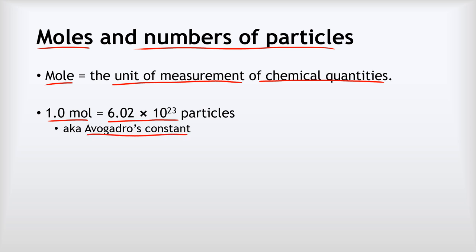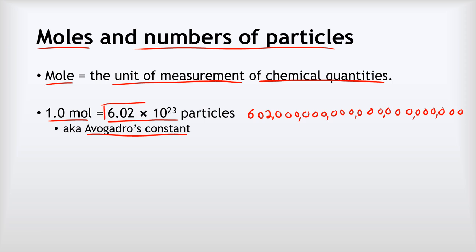You should try to memorize 6.02 × 10²³. This is an absolutely enormous number — 602 million trillion is roughly what it is — so we use it in standard form so you don't have to spend ages writing it down, and we call it Avogadro's constant.